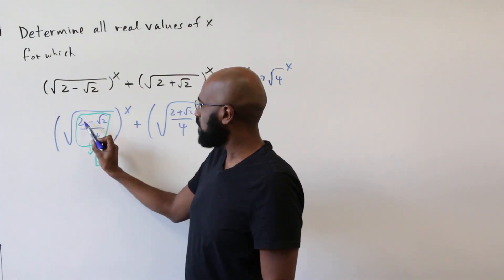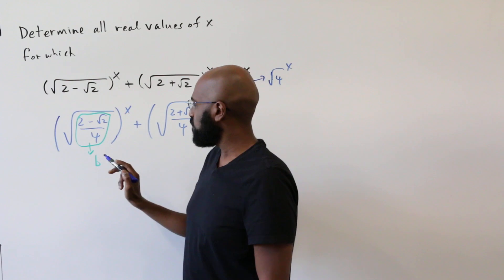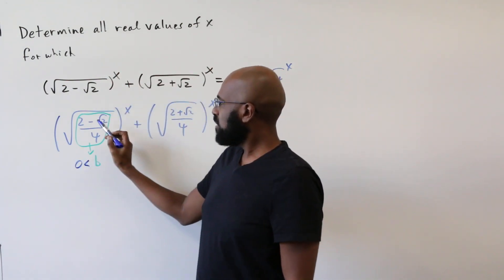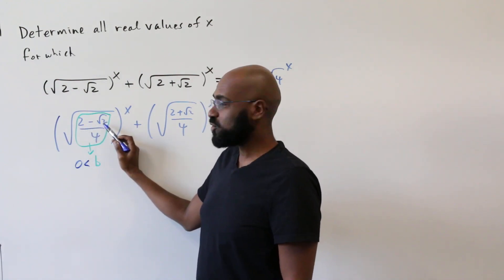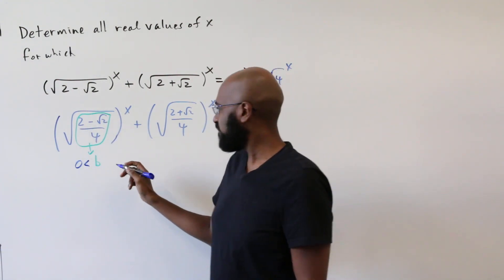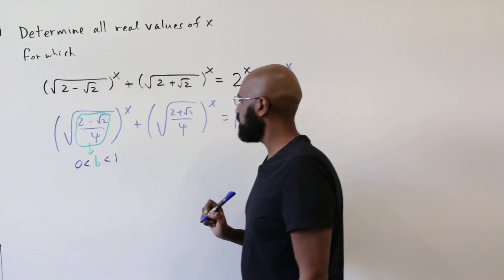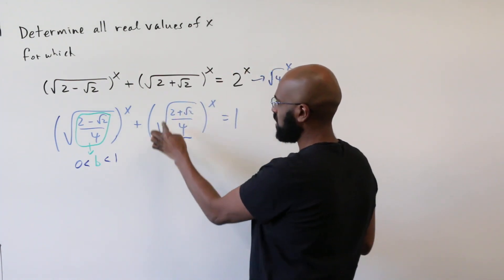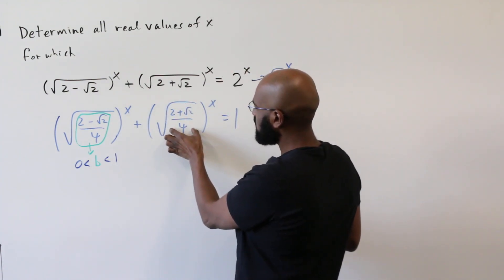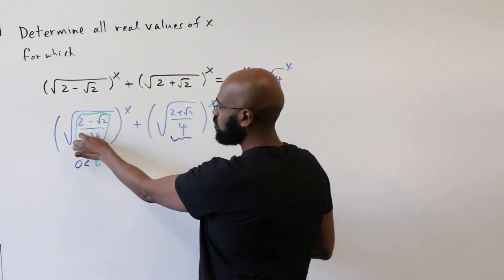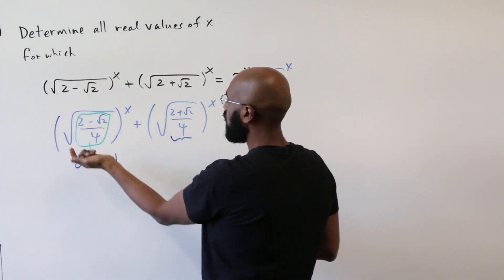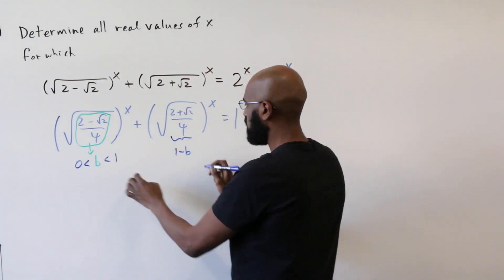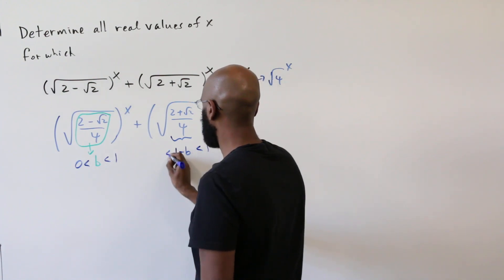First we notice that b is a positive number: 2 is greater than root 2, so this is strictly greater than 0. At the same time, this numerator is strictly less than 2, so this fraction is less than a half — I'll just observe it's less than 1. Moreover, if we look at the base inside the other radical: (2 plus root 2) over 4 plus (2 minus root 2) over 4 equals 1, so that number is 1 minus b. And since b is between 0 and 1, 1 minus b is also between 0 and 1.